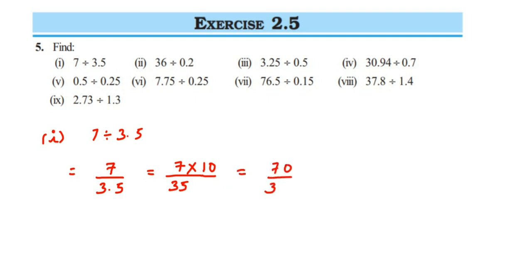Cancel 70 upon 35: in the 35 table, 35 twos are 70, so the answer is 2 upon 1, or simply 2. Always reduce to the lowest form. That was the first question. The second question is next.